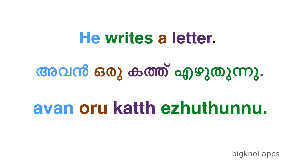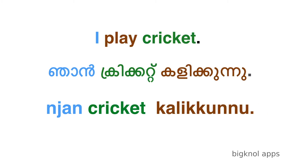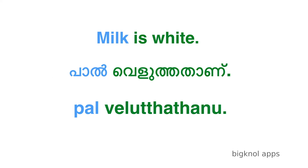Avan means 'he,' oru means 'a,' kath means 'letter,' and iru tunnu means 'writes.' I play cricket: nyan cricket kalikin. Nyan cricket kalikin means 'play.' Milk is white: paal vilutthana.